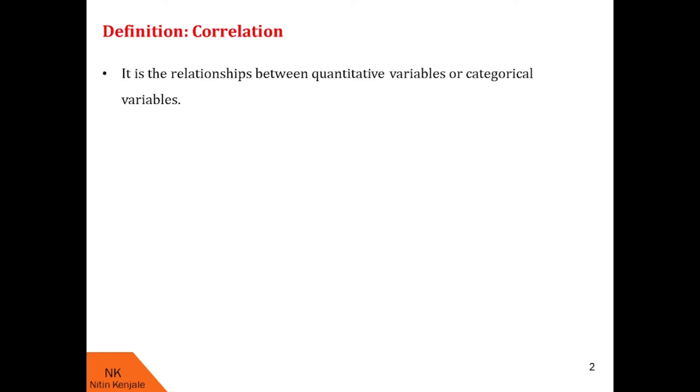It is the relationship between quantitative variables or categorical variables. In fact, it is the measure of how things are related to each other. Some of the examples of data that have high correlation are as follows.